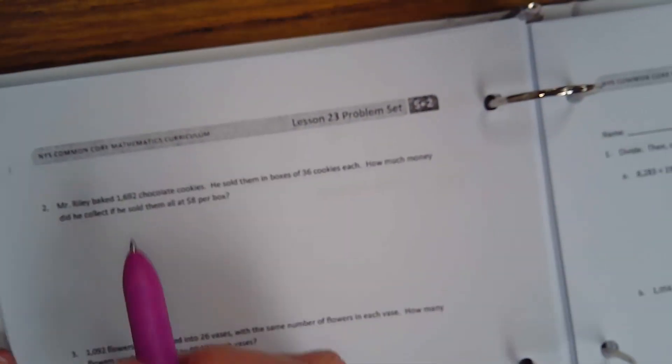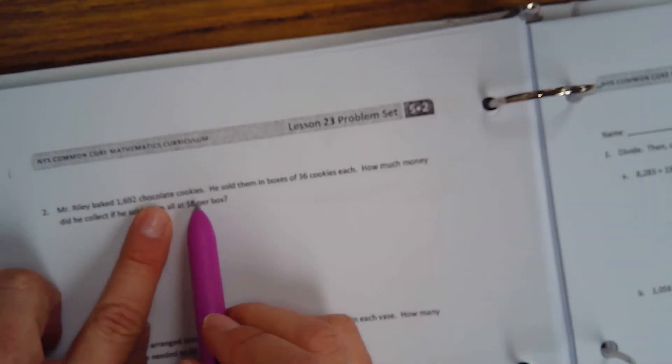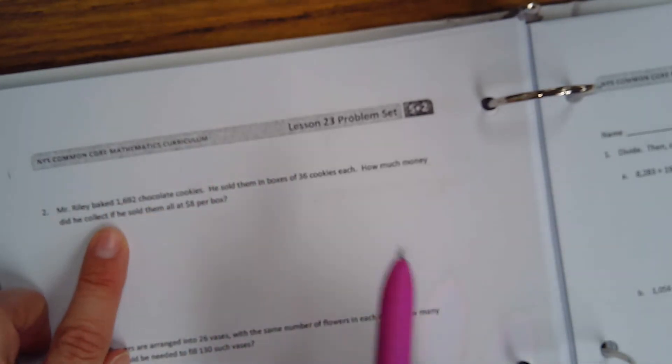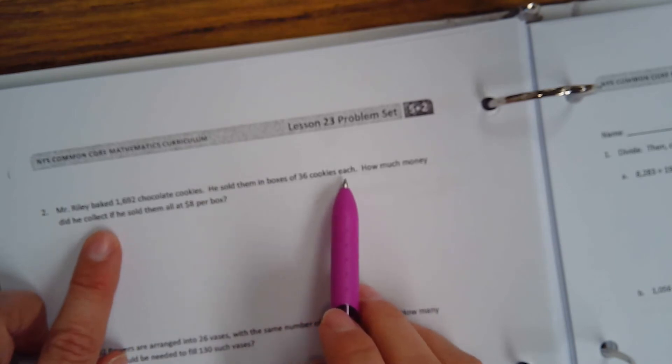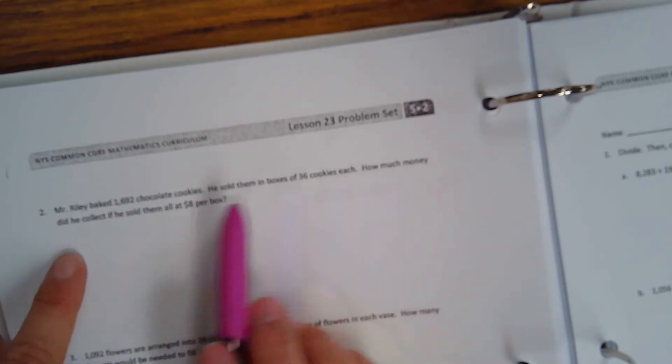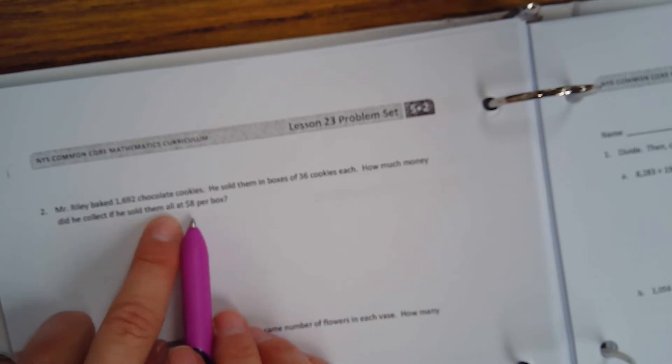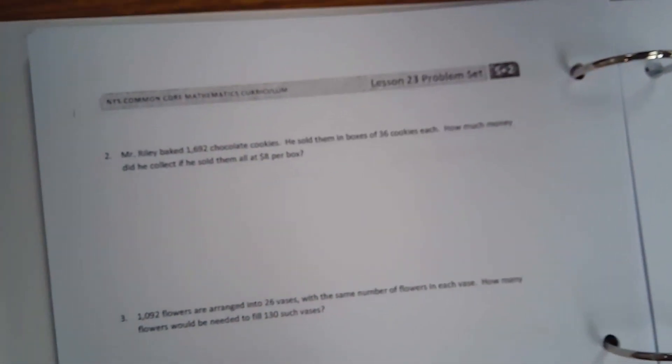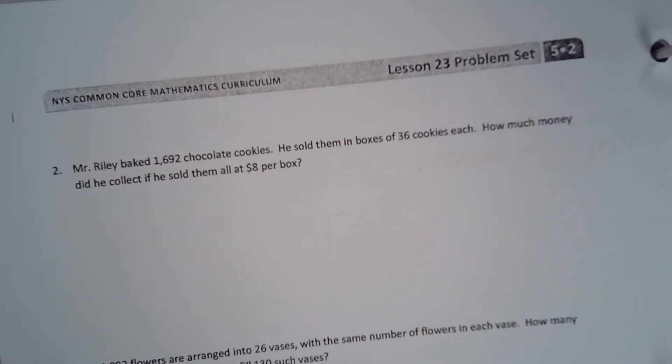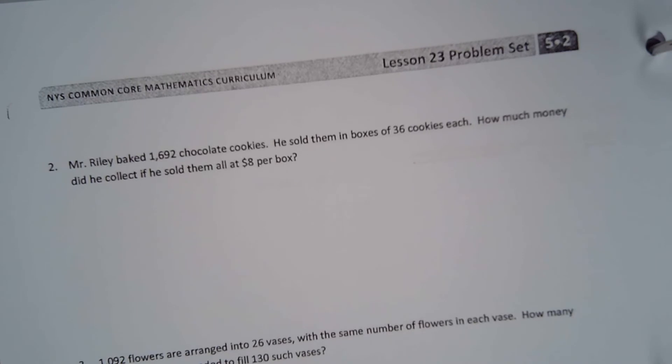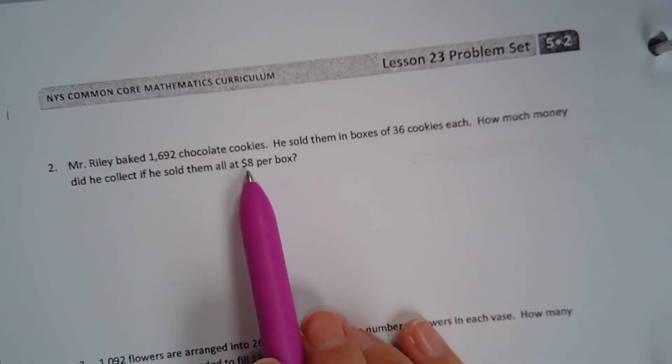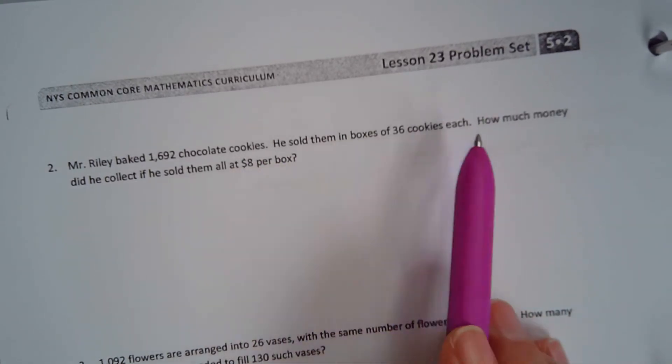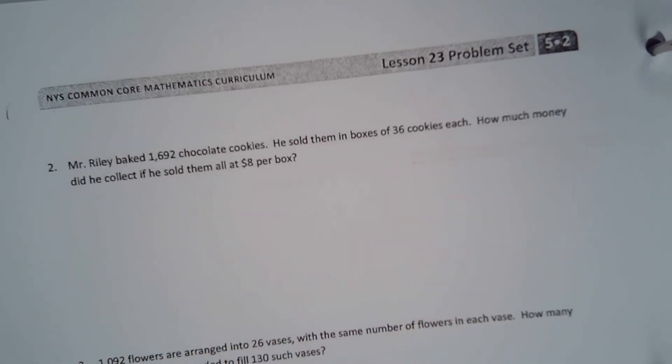Mr. Riley baked 1,692 chocolate chip cookies. He sold them in boxes of 36 cookies each. How much money did he collect if he sold them for $8 per box? Yes, this is a two-step problem. You need to divide and then figure out how much money he made. He tells you how much he sold per box, how much did he make all together.